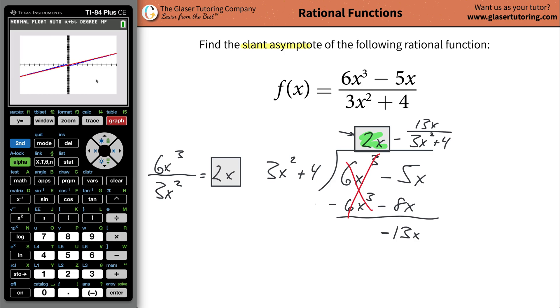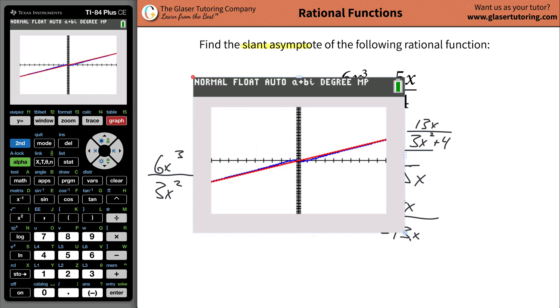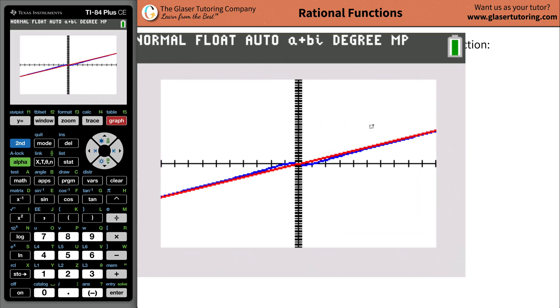And you kind of see how it's not the best picture, but you kind of see how this function here in blue, which was the original, is approaching that red line. And you kind of see how the blue is going to be approaching that red line there. So I hope that kind of, it's not the best visual, but you kind of see how that slant asymptote is being approached. The slant asymptote is in red and the original function there is in blue.